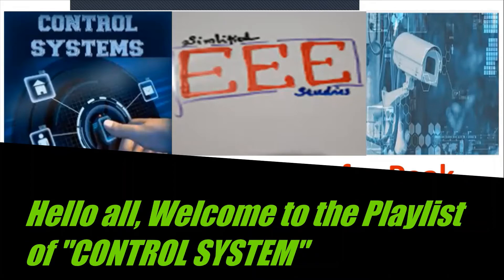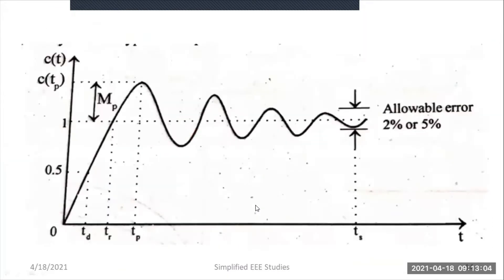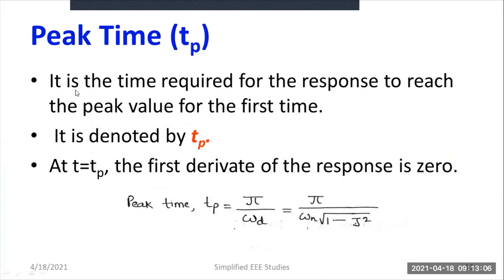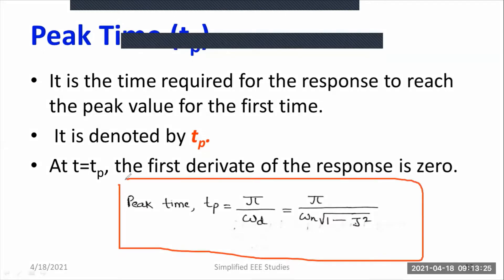In this video, I will be deriving an expression for peak time. In the previous video, I have explained what peak time means. Our ultimate goal is to derive this particular expression: peak time equals pi divided by omega d.